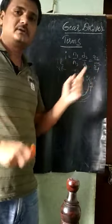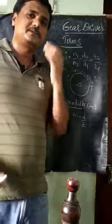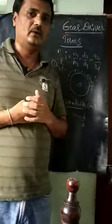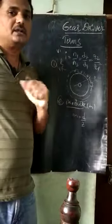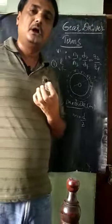The transmission ratio depends on how we choose the number of gears. The next important term is the module, indicated by M. Module is defined as M = D/Z, where D is the pitch circle diameter and Z is the number of teeth on the gear. So module is the ratio of the pitch circle diameter to the number of teeth on the gear. This is the term called the module.